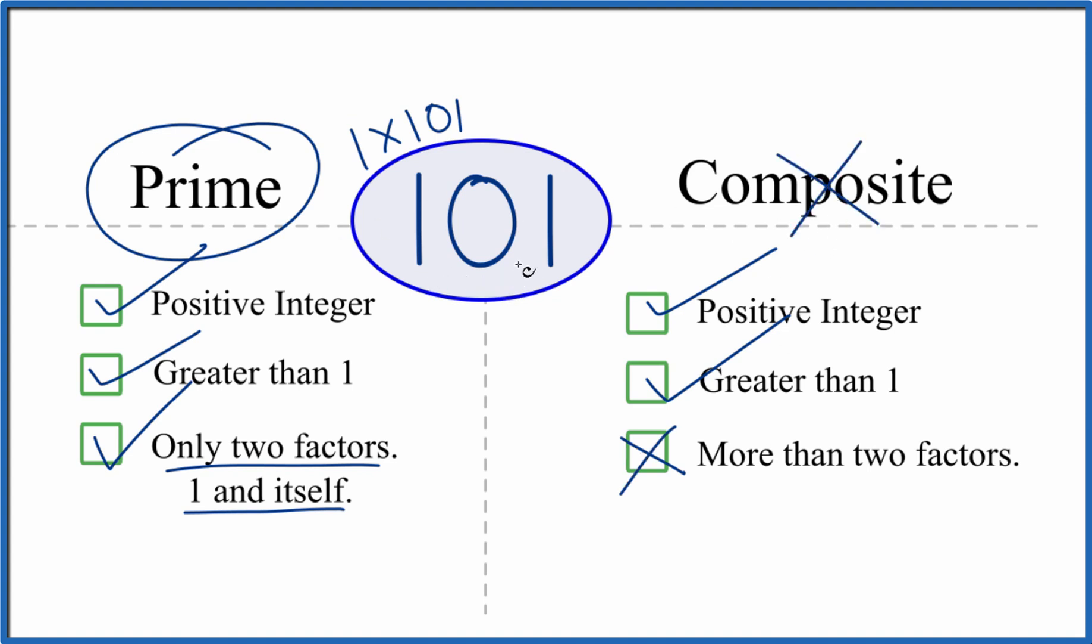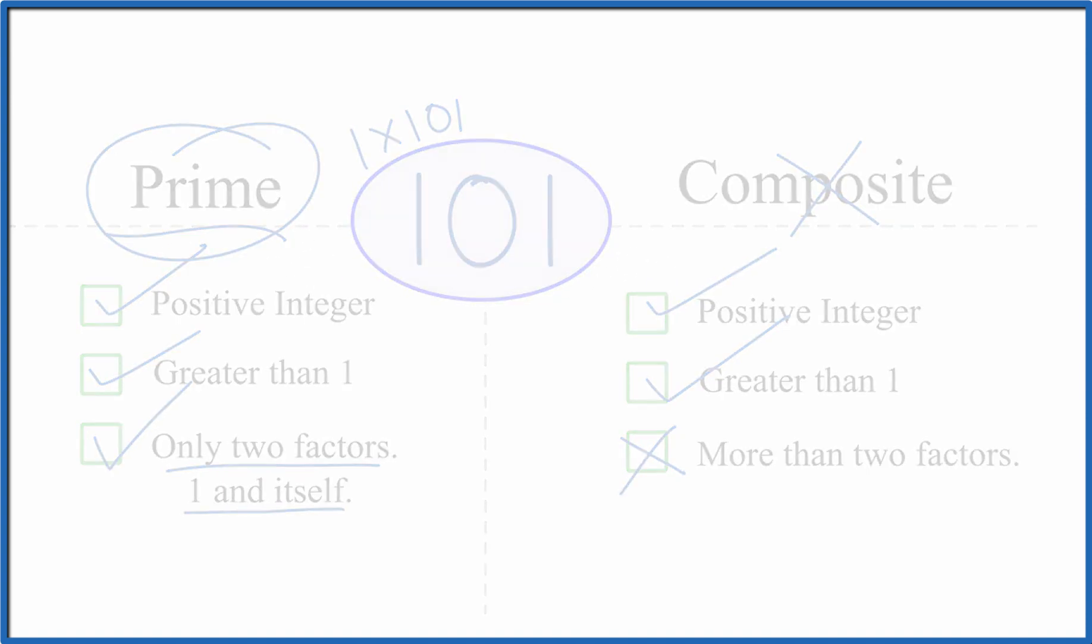This is Dr. B looking at whether 101 is composite or prime. Turns out it is prime. Thanks for watching.